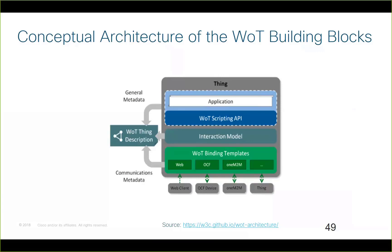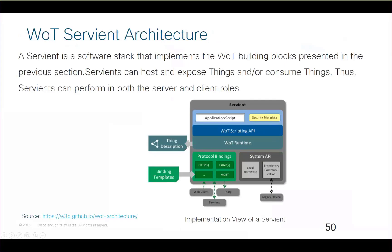What happens when you want a device that can both consume a thing and expose a thing? For this functionality, W3C developed the Servient architecture. The Servient is a software stack that has both roles — it acts as both a server that exposes things and a client that consumes things. The Servient has a scripting API, a runtime, and security metadata aligned with the application script, as well as protocol bindings that talk with different kinds of protocols, and a system API for legacy devices.